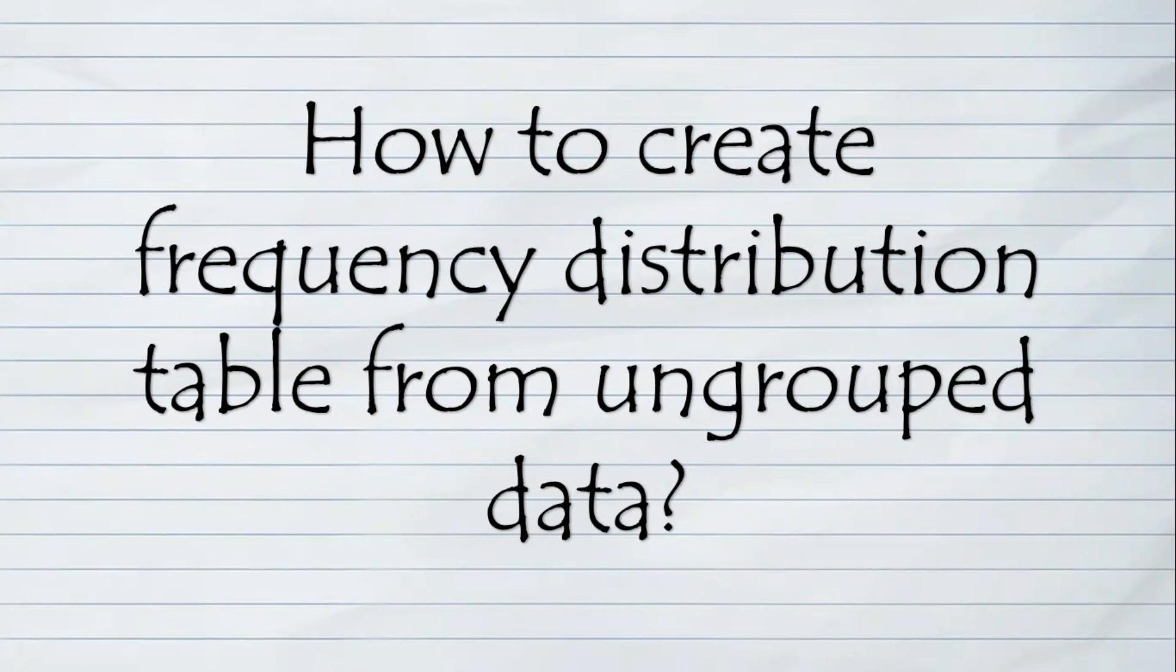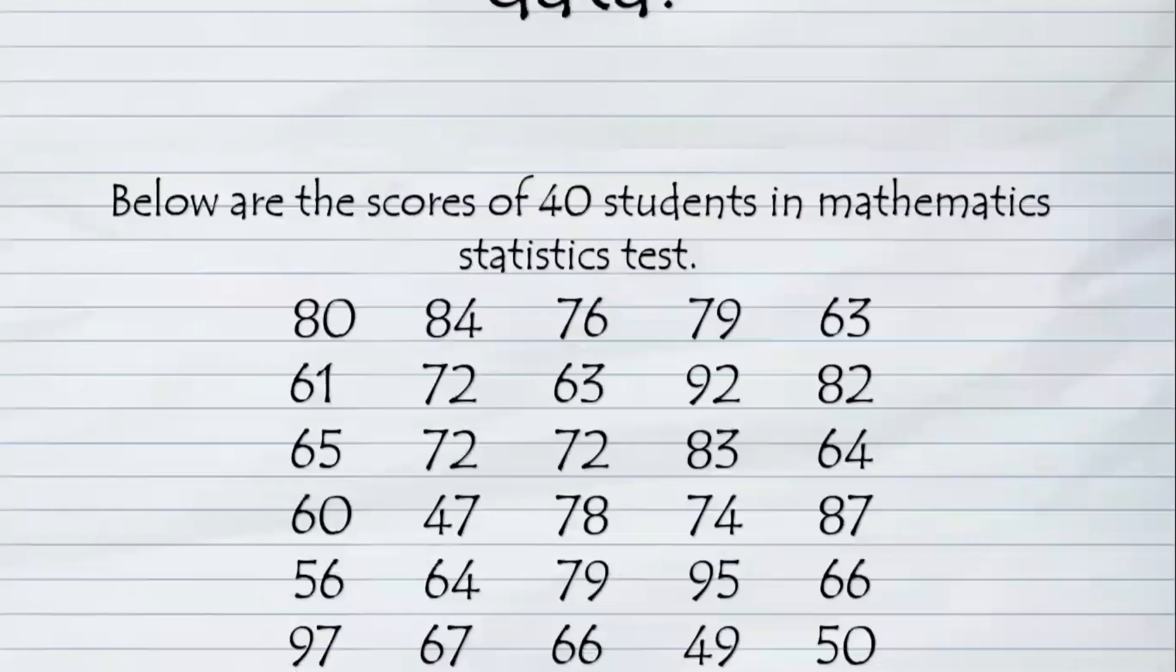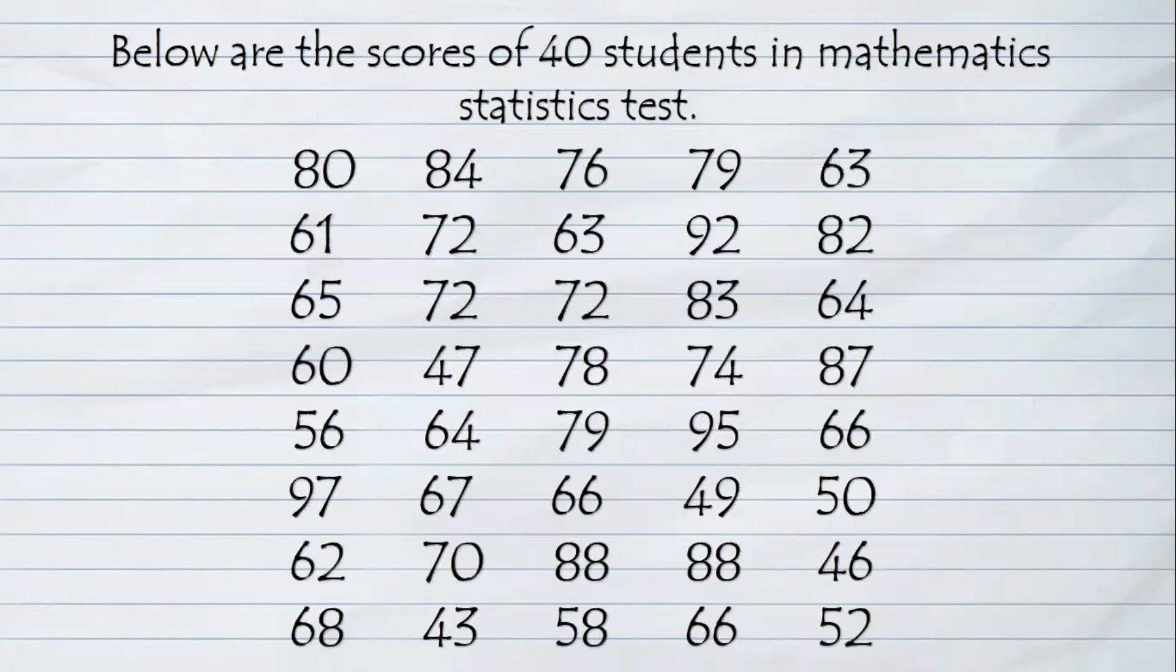Now, let's start. Below are the scores of 40 students in mathematics statistics test. If you observe, we have here a raw data, which is an ungrouped data.